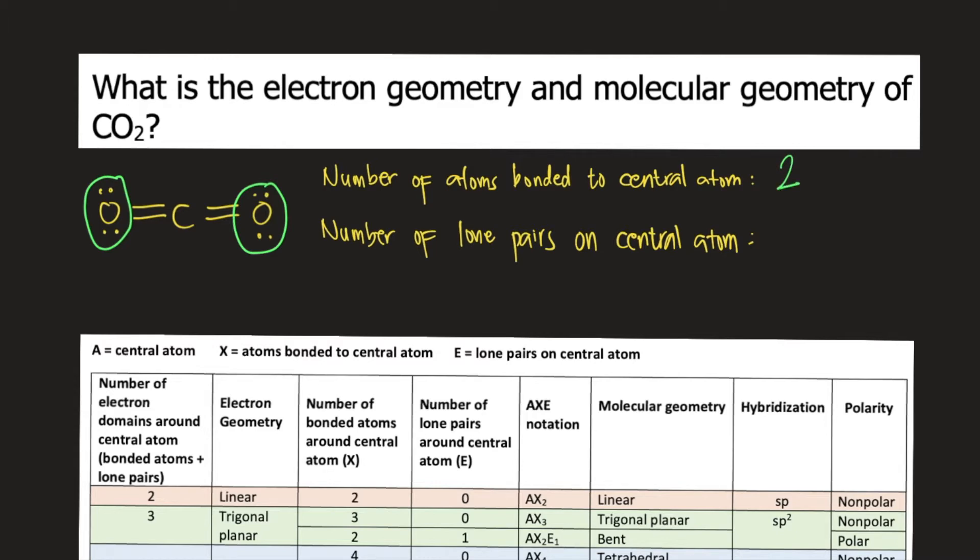Next, count the number of lone pairs on the central atom. Pair means two, so one lone pair is composed of two non-bonding electrons. In the Lewis structure, the lone pair is seen as a pair of dots. For example, in the Lewis structure of carbon dioxide, the dots around oxygen are lone pairs.